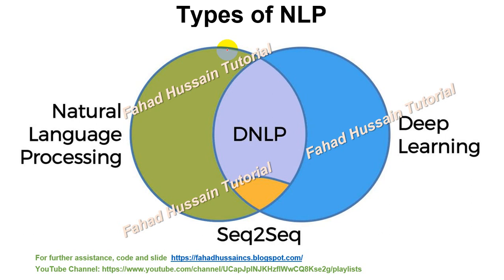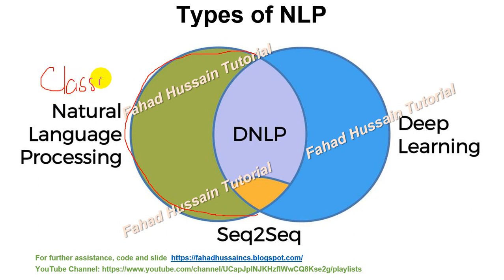So far we have understood the course we are studying, its prerequisites, and seen the traditional Wikipedia definition of NLP. Now let's talk about the two basic types of NLP, which I will explain using a Venn diagram. On the left side of the Venn diagram is the full circle representing classical NLP — the complete natural language processing traditional approach.